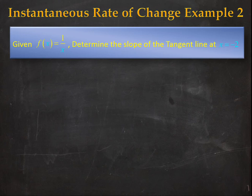Our function today is f of x equals 1 over x and we would like to determine the slope of the tangent line specifically at x equals minus 2.